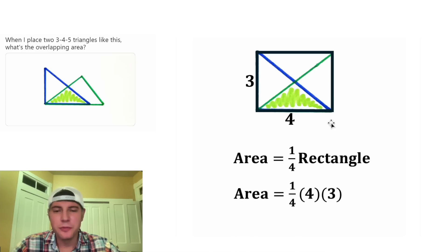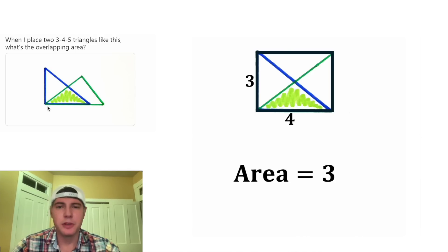And the area of this rectangle would be 4 times 3. So the area is one-fourth of 4 times 3. And the one-fourth and 4 can cancel each other out. So the area of this overlapping region is equal to 3 units squared.